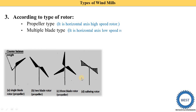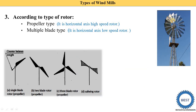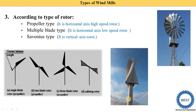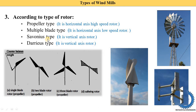The second rotor type is the multiple blade type, which is also used in horizontal axis windmills — here you can see the diagram showing multiple blades. The third type is the Savonius type, used in vertical axis rotors, where the shaft is vertical. The last type is the Darrieus type, also used in vertical axis rotors. All these rotor types will be discussed in detail in separate videos on horizontal and vertical axis windmills.